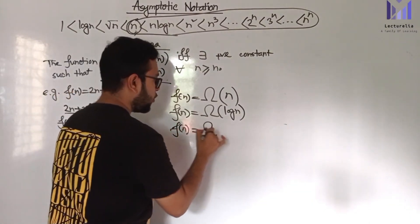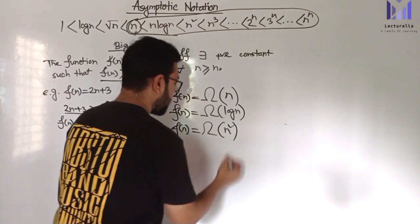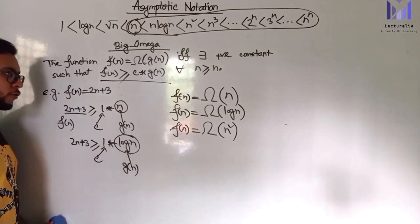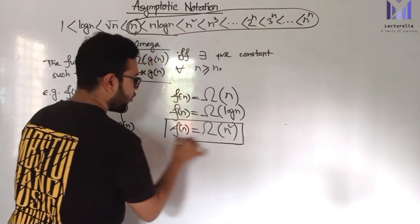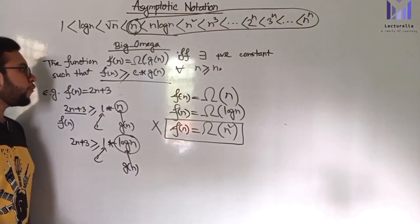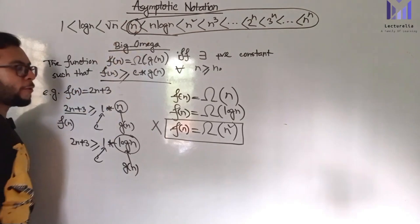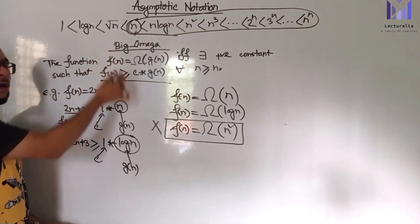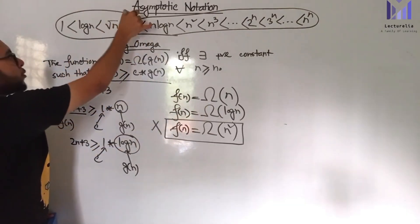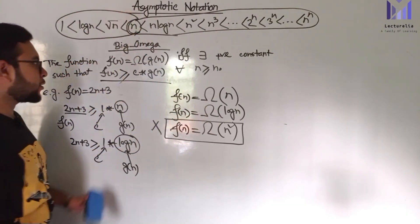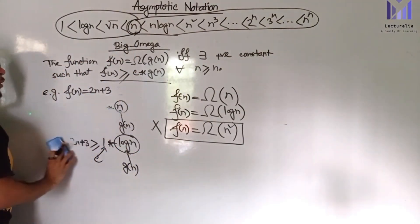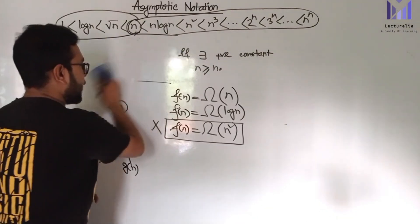So f(n) is equal to Omega of n squared. Of course, we also have Theta.